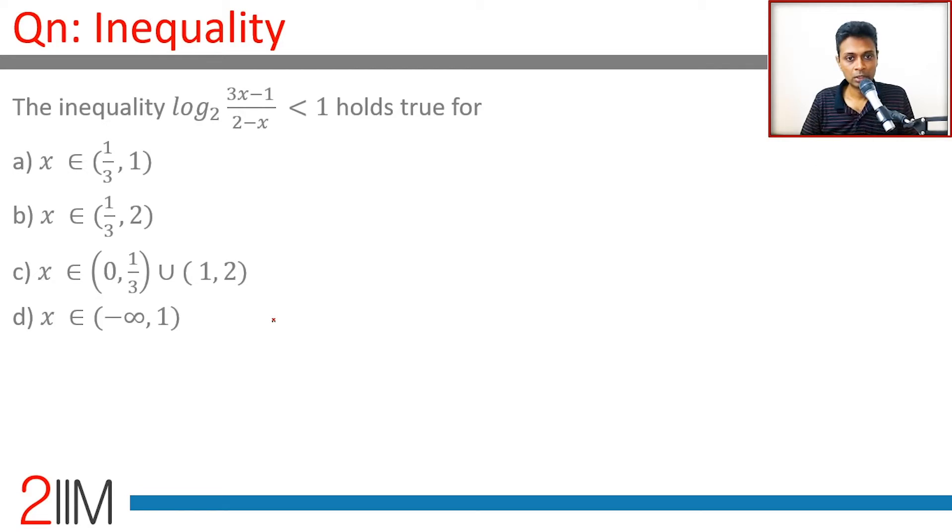Inequalities. Log to the base 2 of (3x - 1)/(2 - x) is less than 1. First of all, log to the base 2 of a negative number is not defined.